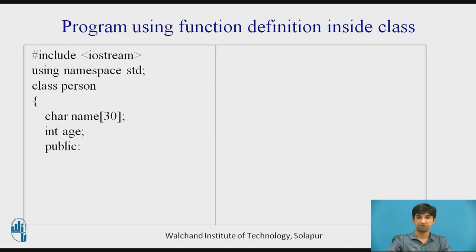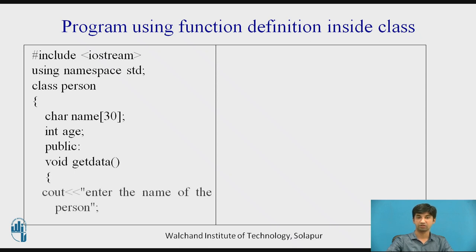Then the public access modifier — these functions can be accessed by other objects and classes. Void getData is for getting input from the user. I am defining this function inside the class. Void getData has no return type and does not return any value. Then cout with the insertion operator displays 'Enter the name of the person' on the screen. Whatever is after the insertion operator gets displayed automatically.